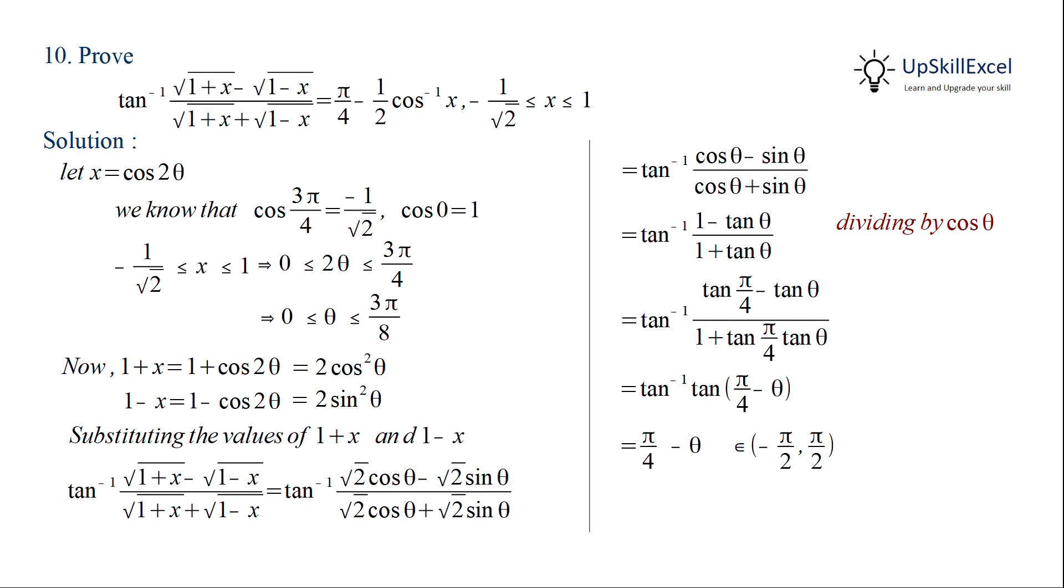From the assumption x equal to cos 2 theta, we substitute theta equal to half of cos inverse x, giving us the answer pi by 4 minus half of cos inverse x.